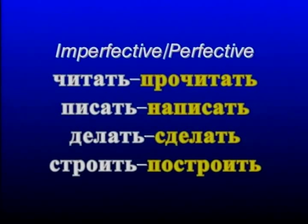You remember that we have been discussing the use of perfective and imperfective verbs in the Russian language. You learned that Russian verbs are arranged in pairs. An imperfective verb has its perfective pair. So very quickly let's go over our imperfective and perfective verbal pairs. Читать,